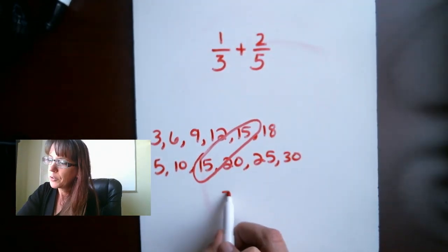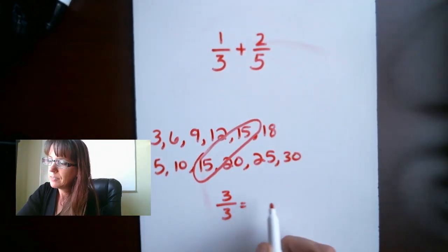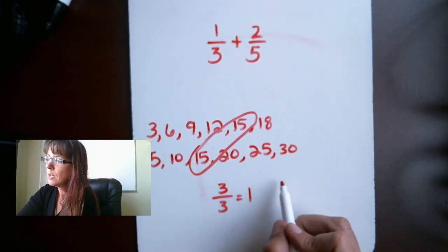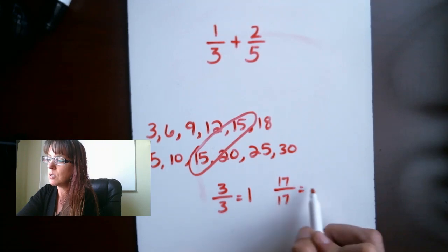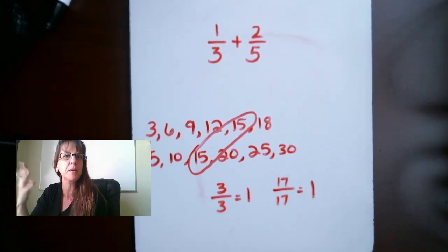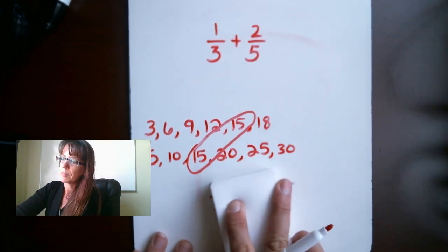If you have 3 over 3, just like with our first problem that we started with, we know that that equals 1. 17 over 17 equals 1. Anything that's on the top and the bottom, it equals 1.